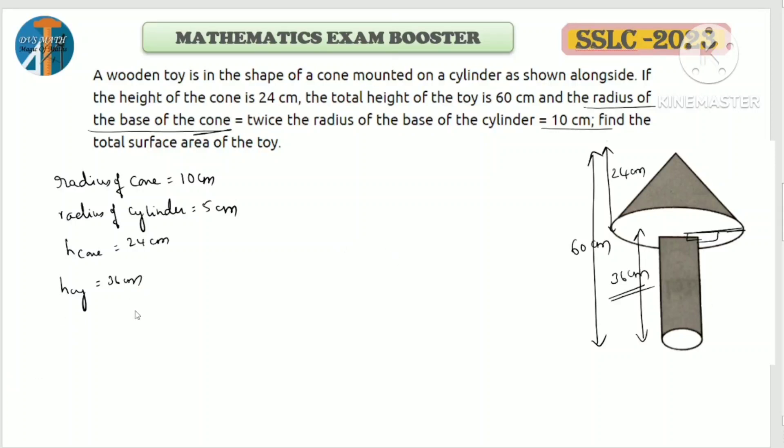We have to find the slant height of the cone. What is the formula? L square is equal to R square plus H square. What is the radius of cone here? 10. L is equal to square root of 10 square plus 24 square. L is equal to square root of 100 plus 576. L is equal to square root of 676. L is equal to 26 cm. So slant height of cone is 26 cm.